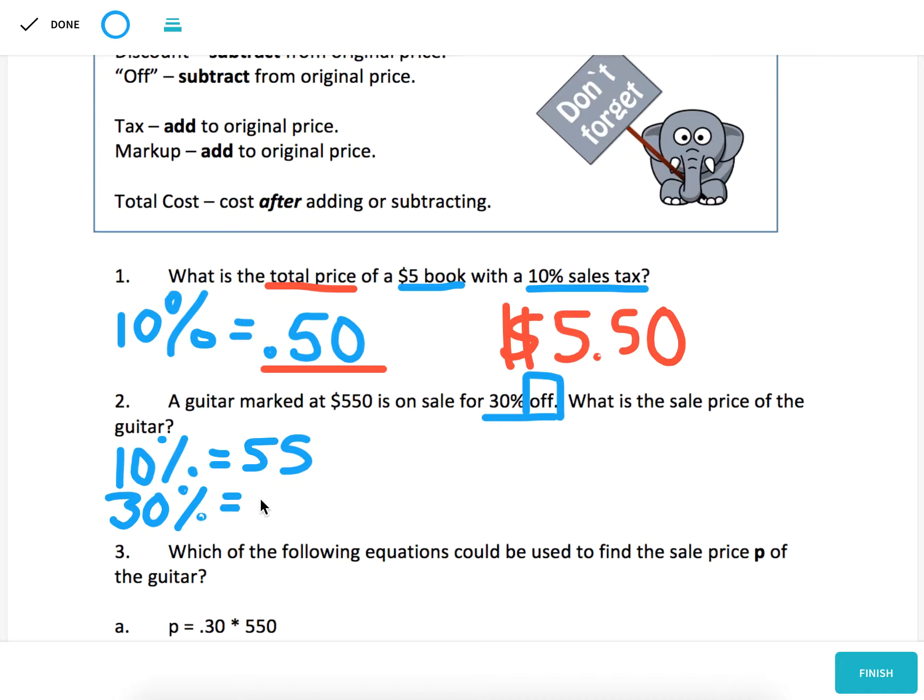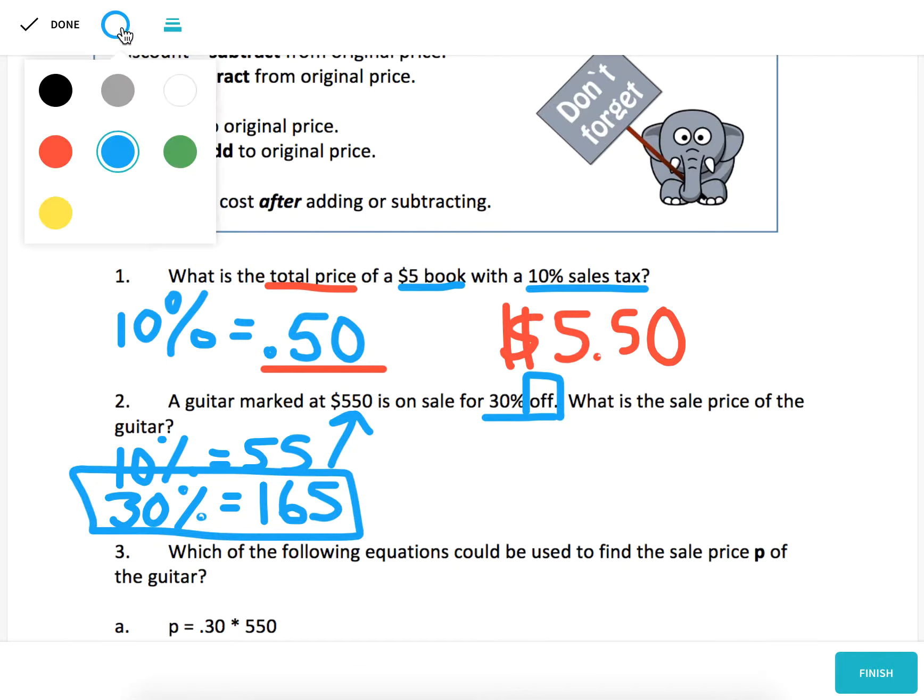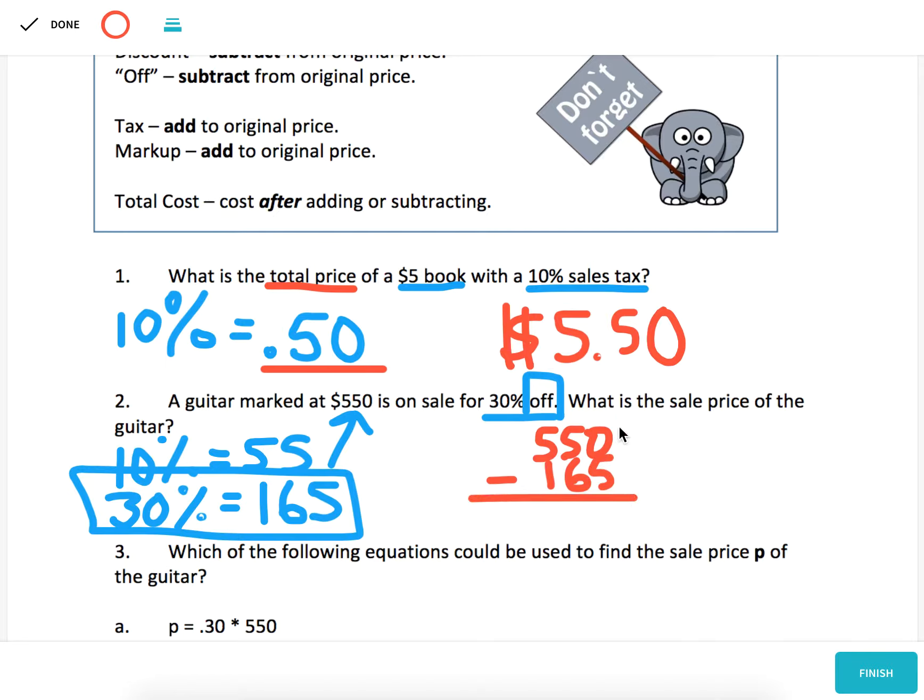Well, 50 times 3 is 150, 5 times 3 is 15. So 150 plus 15 is 165. The most common error students make is giving this as their answer, $165. But that's not the price of the guitar. The guitar is being sold for 30% off. So we have to take 30% of the price, which is $165, and subtract it away from $550. And when we do that, we're going to get $385.